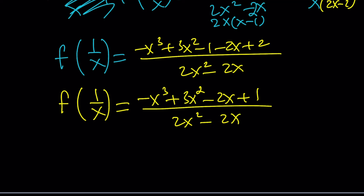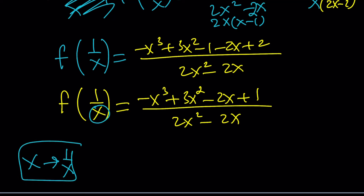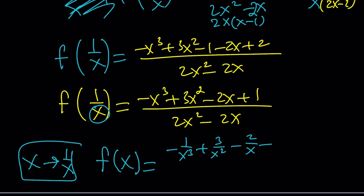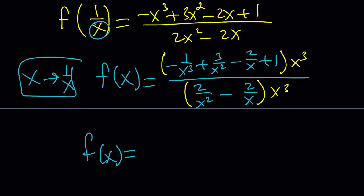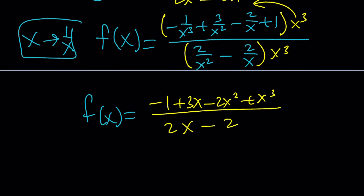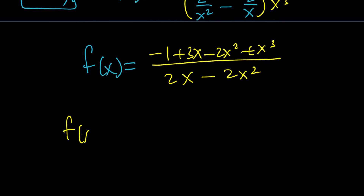Finally, I'm going to replace x with 1 over x to get f of x — since f of 1 over 1 over x is f of x. We get negative 1 over x cubed plus 3 over x squared minus 2 over x plus 1 divided by 2 over x squared minus 2 over x. Multiplying top and bottom by x cubed, we get negative 1 plus 3x minus 2x squared plus x cubed in the numerator and 2x minus 2x squared in the denominator. Writing in standard form, f of x equals x cubed minus 2x squared plus 3x minus 1 divided by 2x minus 2x squared.